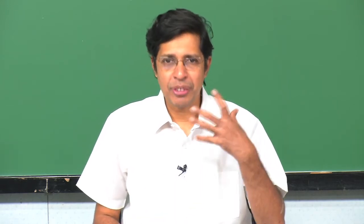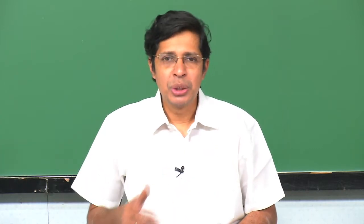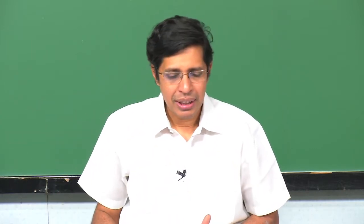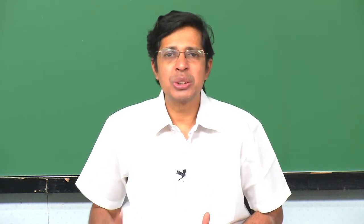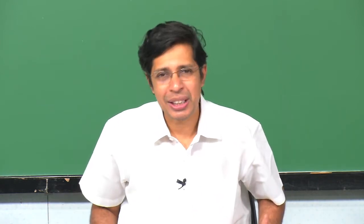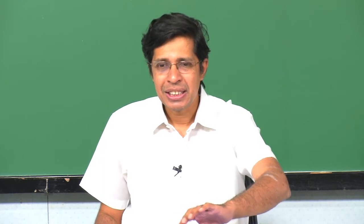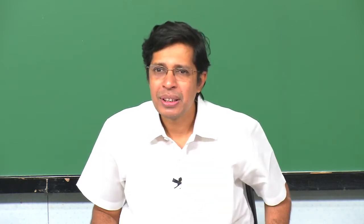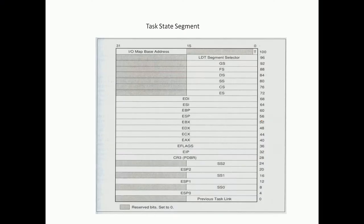A task switch — from one process to another — happens due to a jump or call instruction whose segment selector points to a task state segment descriptor, which in turn points to the base of a new task state segment. Now let us understand what a task state segment is. It has 104 bytes, from 0 to 104, and there are several things in it — many you will immediately follow, some may take time.